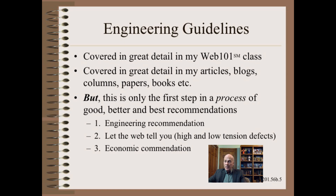Engineering recommendations are merely starting points in a three-step process of going from good to better and then all the way to best. As we learned in our Web 101 class, step one is to start with a good idea — engineering recommendations — which are usually wide enough to allow us to build a machine with an adequate tension range, but not nearly good enough to pick a tension setting on that machine.